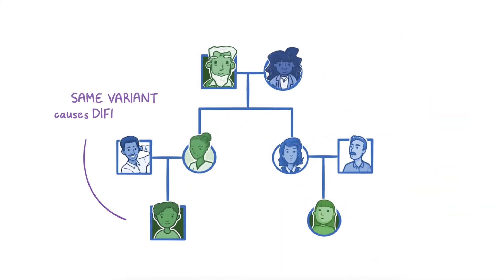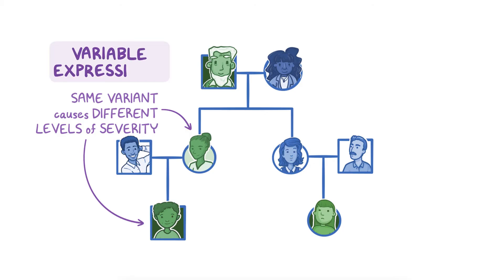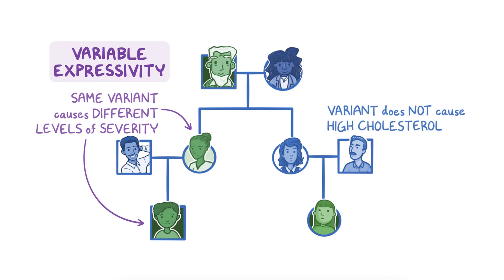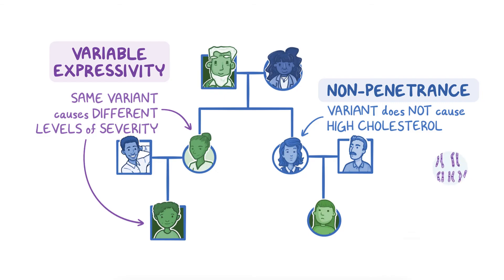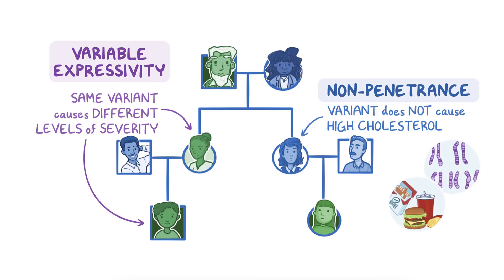Among family members, the same variant can cause different levels of severity. This is called variable expressivity. And in some instances, the variant may not cause high cholesterol at all. This is called non-penetrance and may be due to the influence of other genetic factors or even differences in lifestyle or the environment.